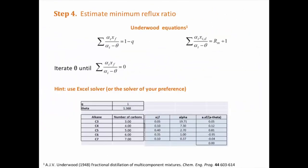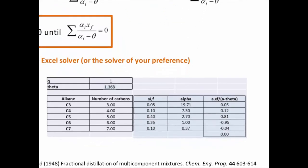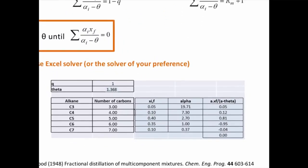Using the Underwood equations, we can determine the reflux ratio. This is also an iterative process, so again a suggestion is to use a solver like Excel. From the equation on the left, we know everything but the parameter theta. Remember that the value of Q for a saturated liquid is 1, so we want to iterate the first equation until we get zero.